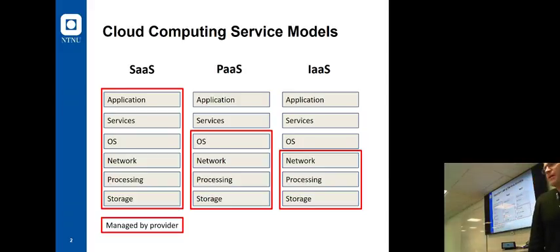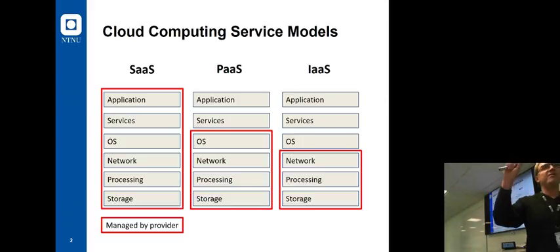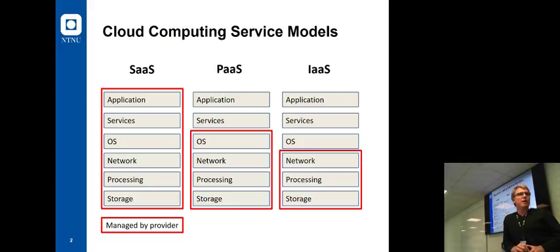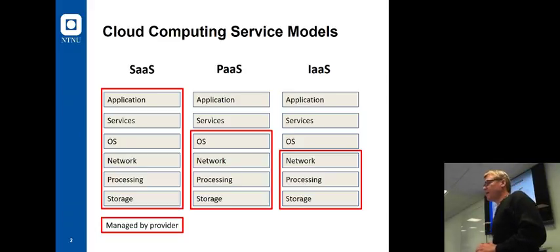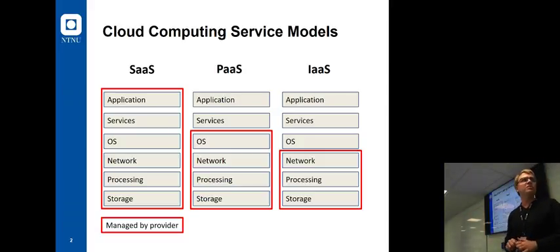With SaaS, everything up to application level is controlled by the vendor. You just use it, but you need to buy into their API — if you want to send something to a Slack webhook, you must comply with their specification, there's no way to change that. PaaS is a bit different: you are actually responsible for the application or services you provide. Depending on the platform, some services are simply not available.